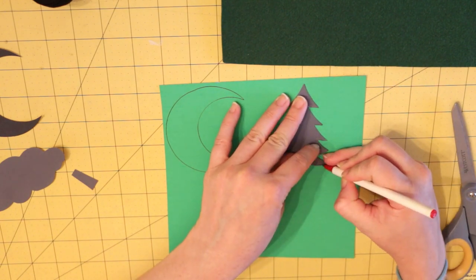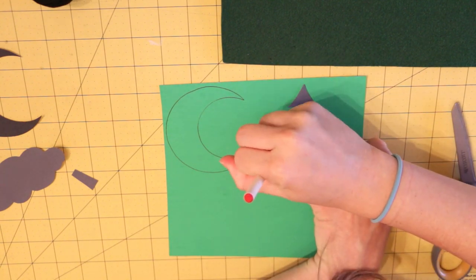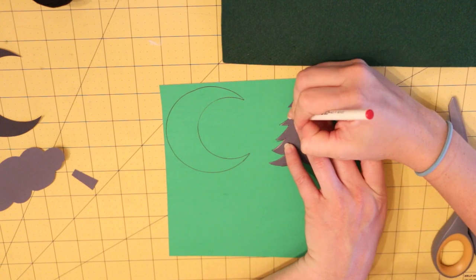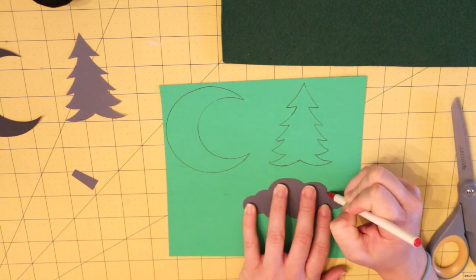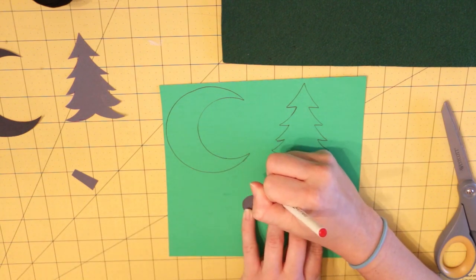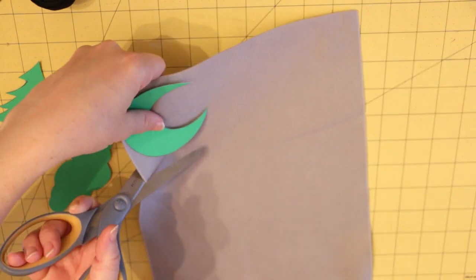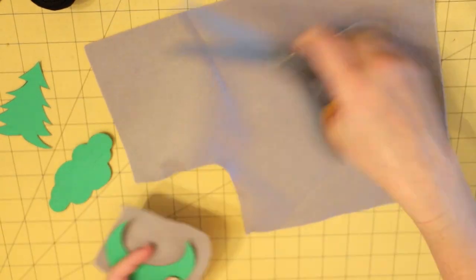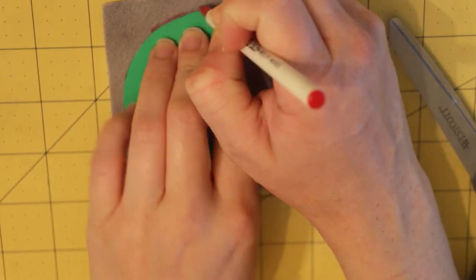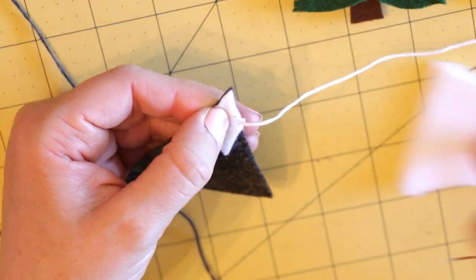Using different colored felt, I cut out my template shapes. Next, using embroidery thread and a needle, I started to sew my felt pieces together.